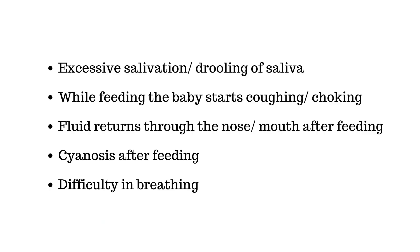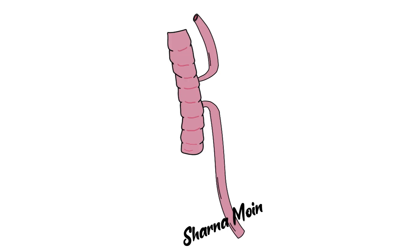The key signs and symptoms of esophageal atresia are: excessive salivation or drooling while feeding; coughing or choking; fluid returning through the mouth and nose after feeding; bluish coloration of the skin (cyanosis), especially after feeding; and difficulty breathing. Furthermore, a fistula between the lower esophagus and trachea may allow stomach acid to flow into the lungs and cause damage.